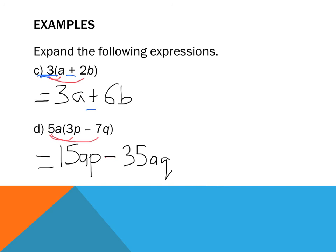My answer is 15ap minus 35aq. I don't have any like terms so I can't simplify further. To summarize: multiply everything inside the brackets by what's on the outside, one term at a time. Take note of whether numbers are positive or negative — that's really important when multiplying. And deal with your numbers first and your pronumerals second. That's expanding with brackets.